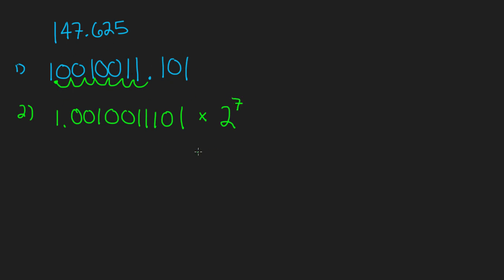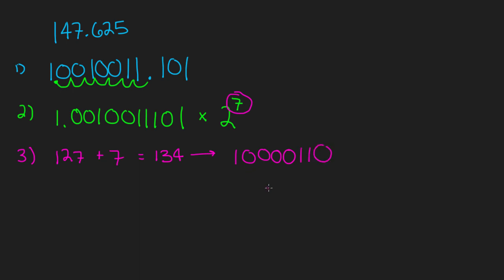Now we need to figure out the exponent. For IEEE 754 we need to convert it into excess-127 notation. To do that, you take 127 and add 7 — our exponent — which equals 134. From that you take the binary representation of 134, which is 10000110. This will be our exponent.